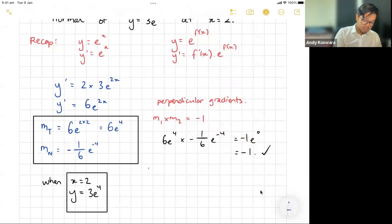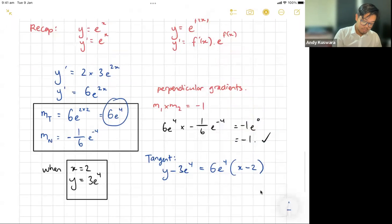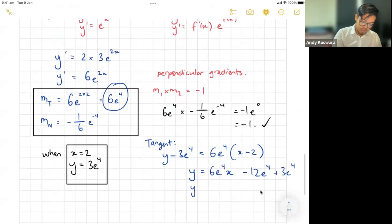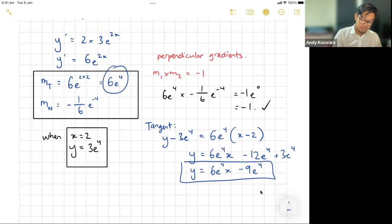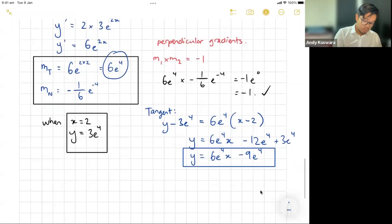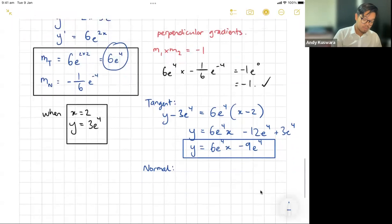Let's try tangent first. Tangent is going to be y minus y1, so y minus 3e to the 4, equals m, and I'm going to take the gradient of my tangent, so in this case it's 6e to the 4, times x minus x1, which is going to be 2. From here I'm happy for us to just go 6e to the 4 times x, take away 12e to the 4, plus 3e to the 4. Cleaning that up a little bit, I'm just left with 6e to the 4 times x minus 12 plus 3 is minus 9e to the 4. I'm happy for that to be the equation of my tangent there: y equals 6e to the 4 times x minus 9e to the 4.